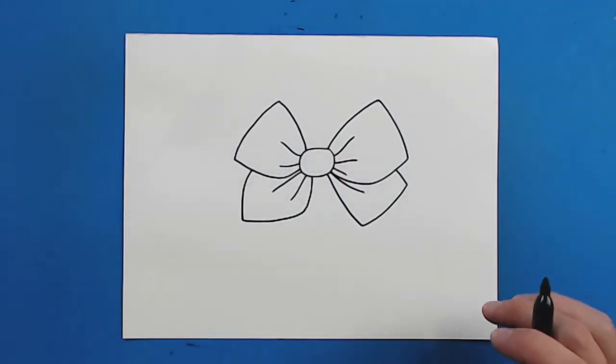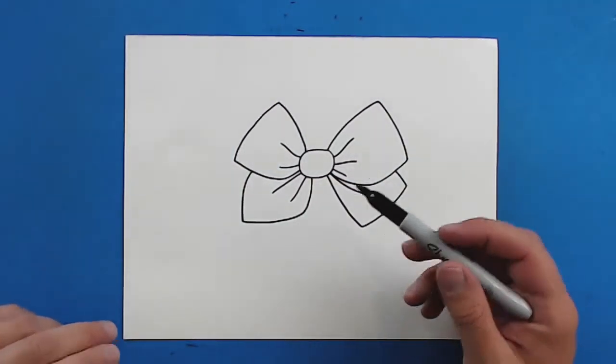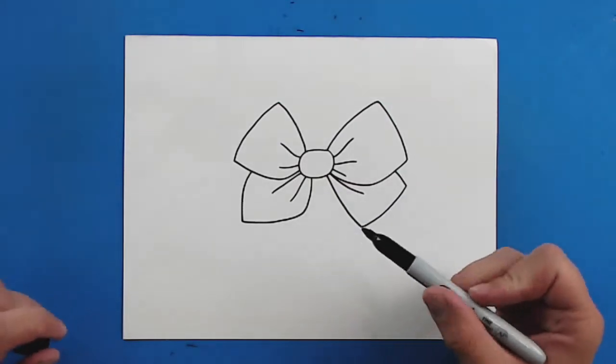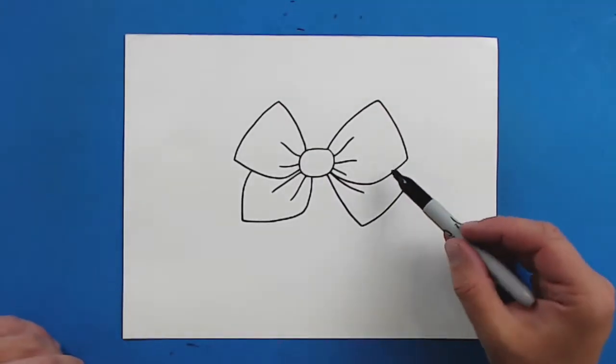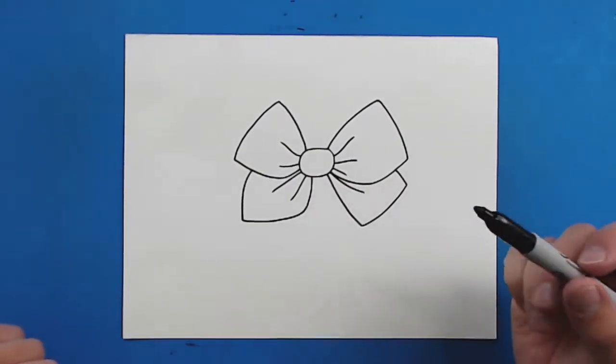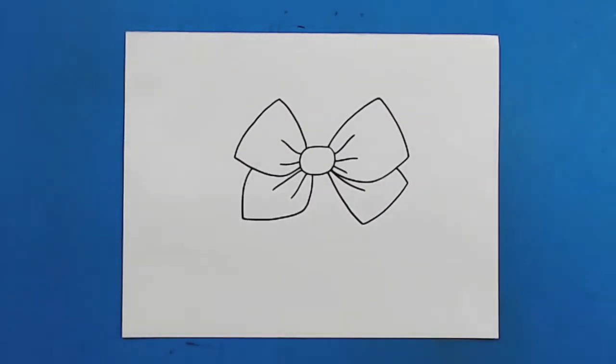Now this is just the basic drawing of a bow. You guys can add all sorts of different details and things on here. You can add designs, polka dots, stripes, whatever you want. I'm going to do all my designs when I color this. So there is your simple drawing of a bow. I'm going to fast forward and start coloring this.